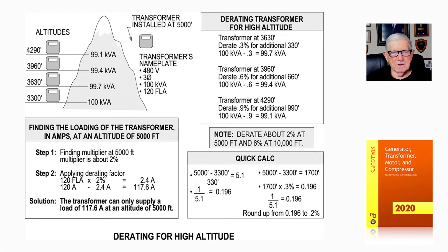Let's take a look at Figure 7-13, derating for high altitude when you install the transformer at 5,000 feet. The drawing shows the transformer installed at 5,000 feet. The transformer's nameplate would have 480 volt 3-phase 4-wire, 100 kVA, 120 FLA when you do your math.